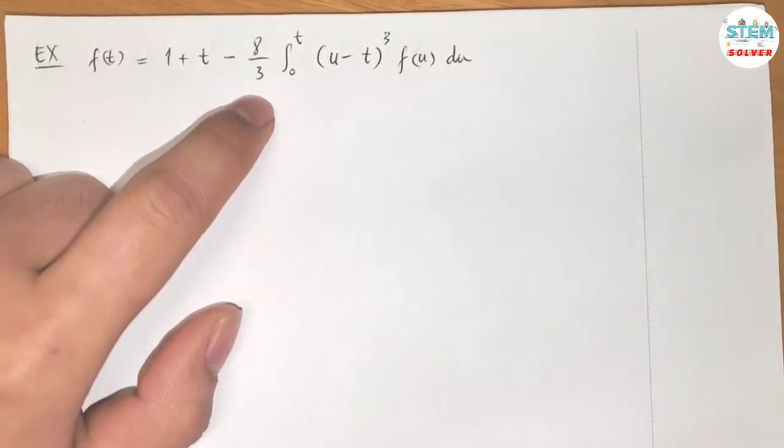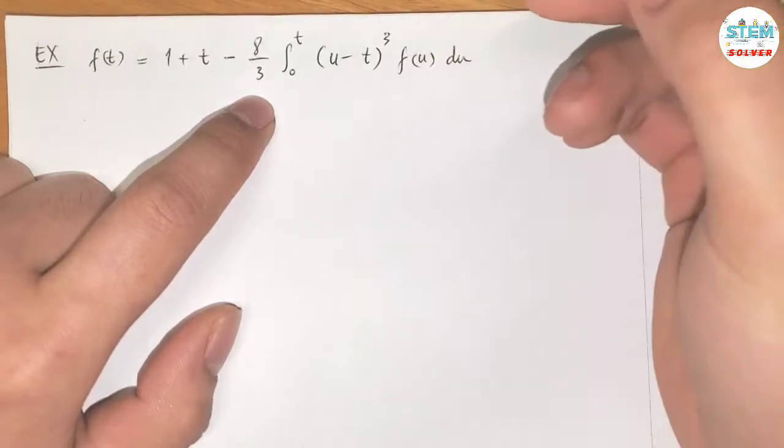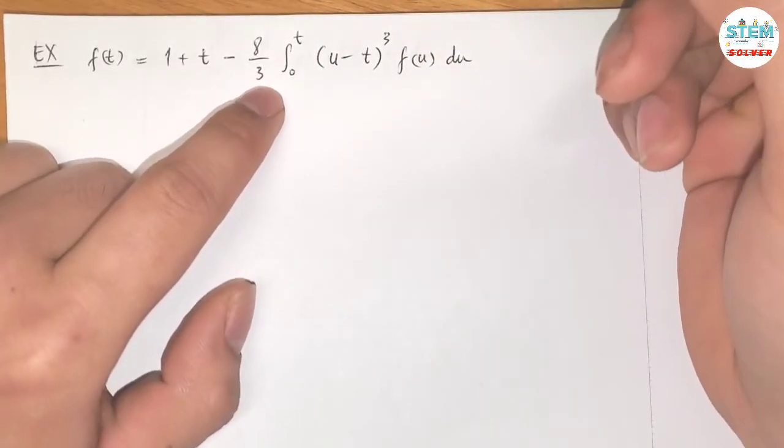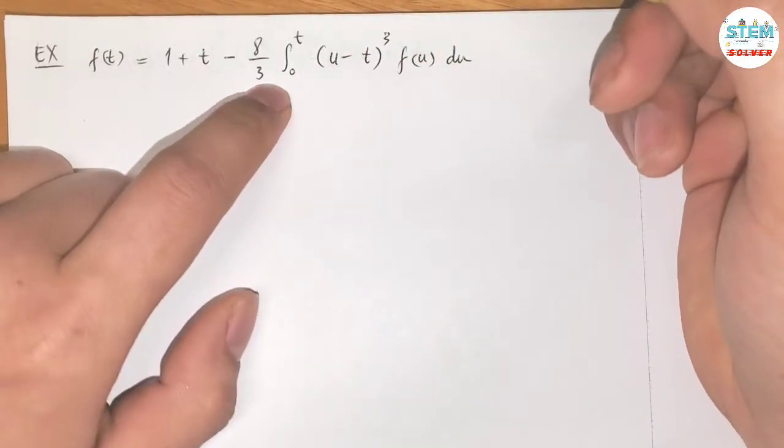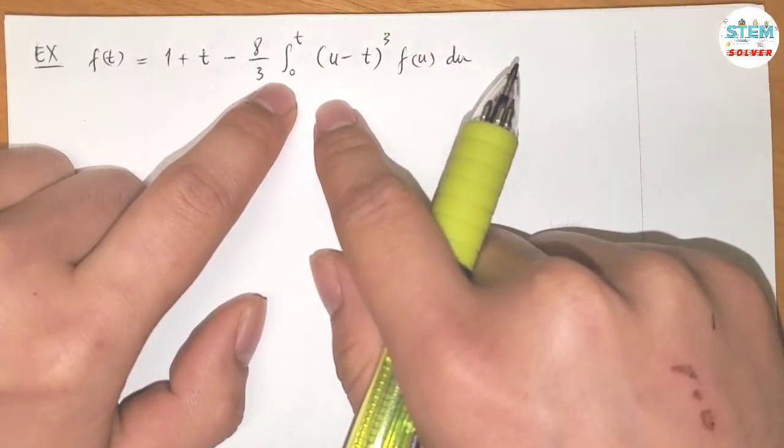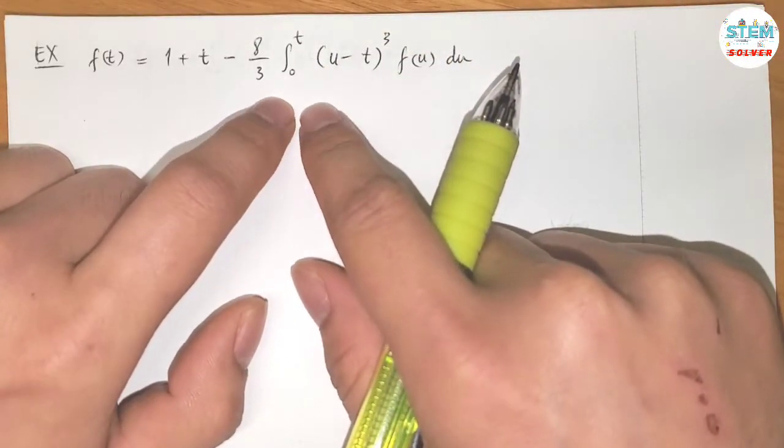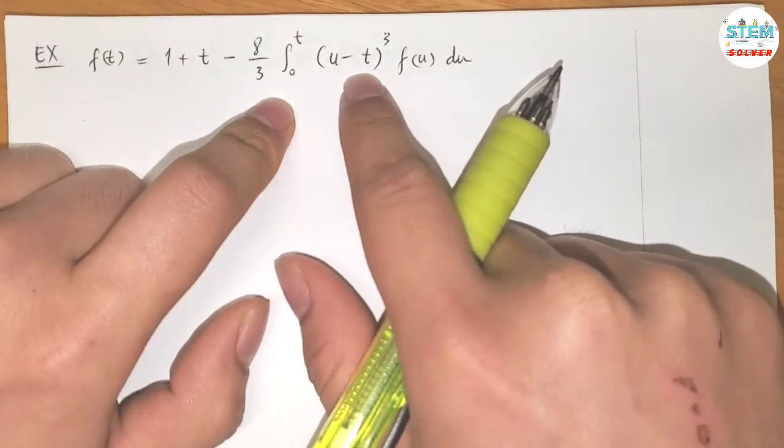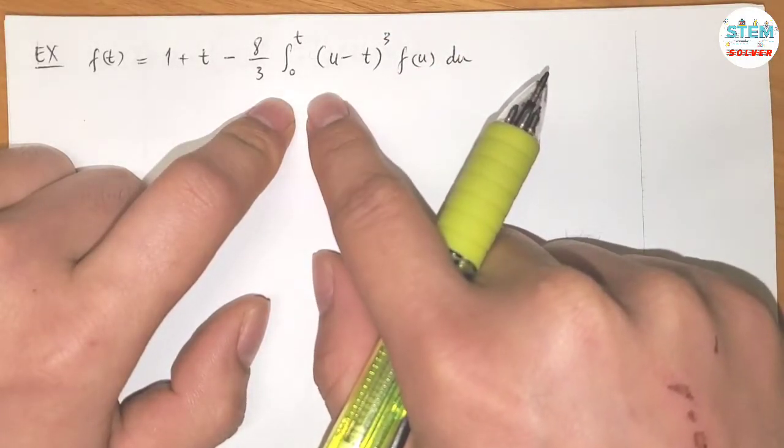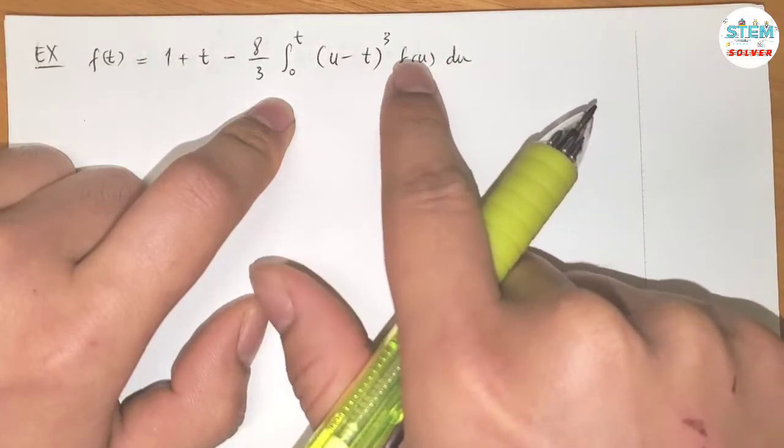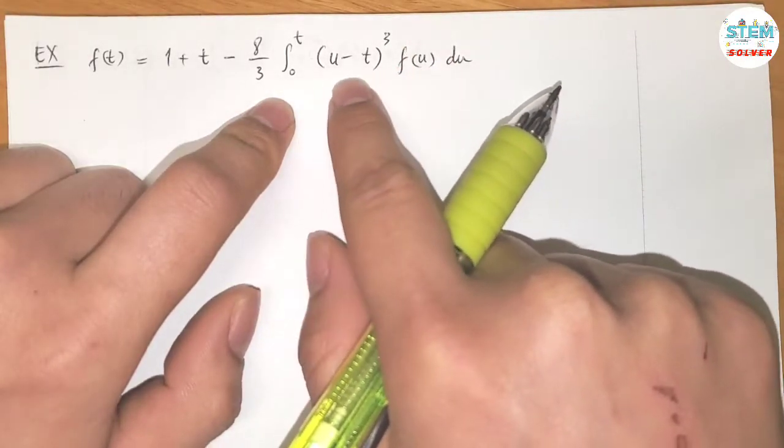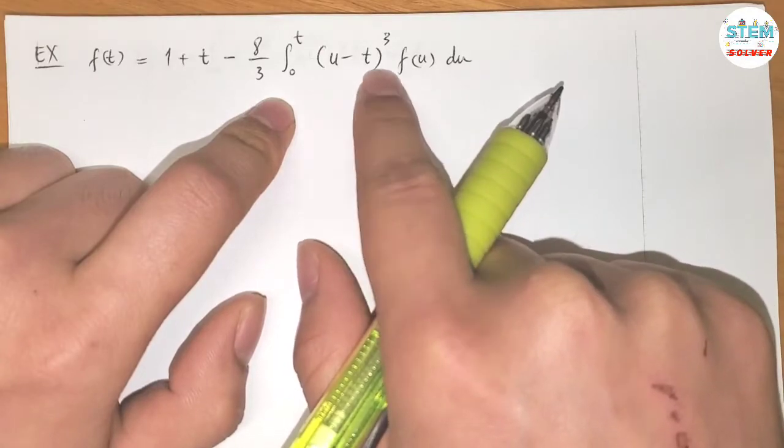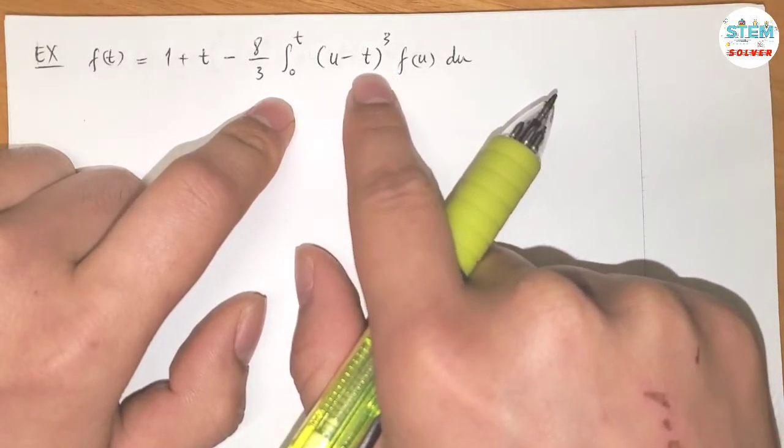So what I'm going to do is use the Laplace transform. In order to do that, I need to rewrite this, I need to somehow manipulate this. If you still remember, we have the convolution method and convolution theorem. In order to use that theorem, we need to have the integral of two functions, one in terms of U and the other in terms of T minus U. For this one, you can see we have functions in terms of U, but this is slightly in terms of T minus U unless they are switched position.